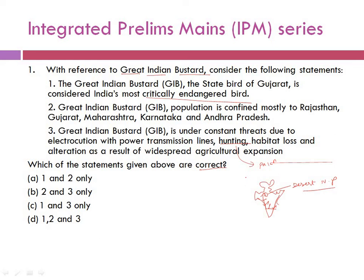Analyzing the first statement: Great Indian Bustard as the state bird of Gujarat is wrong — it is actually the state bird of Rajasthan. Since statement 1 is incorrect, options A, C, and D which contain statement 1 can be eliminated. The correct answer is Option B — statements 2 and 3 only. The distribution across five states and the threats from power lines, hunting, habitat loss, and agricultural expansion are all correct.